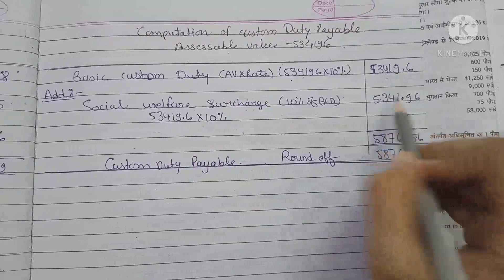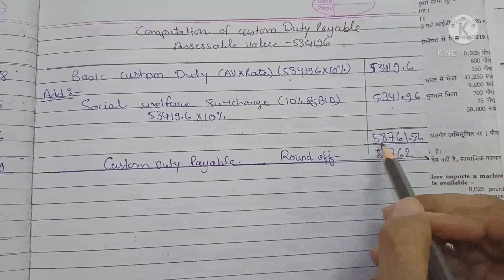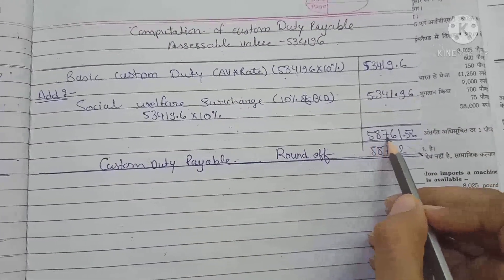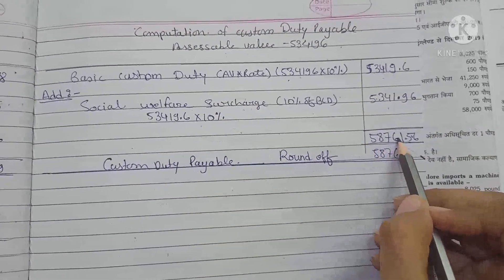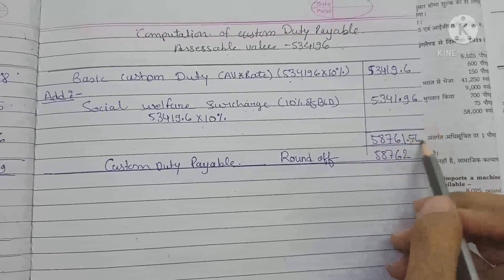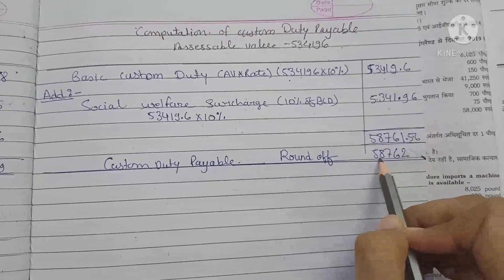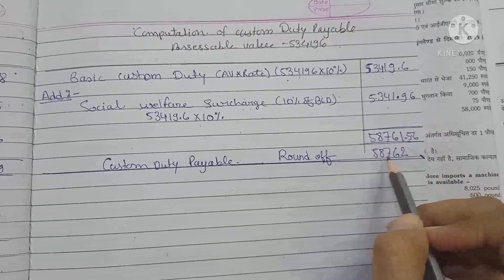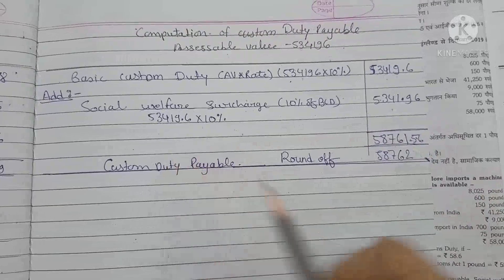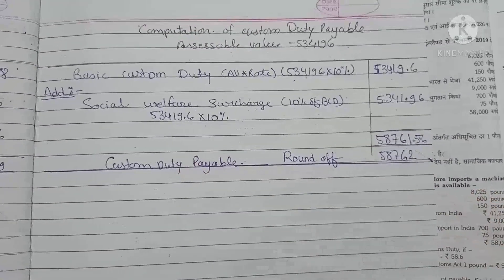We add social welfare surcharge at 10% of basic customs duty: 10% of ₹53,419.60 = ₹5,341.96. Since GST is not applicable, the total customs duty payable is ₹53,419.60 + ₹5,341.96 = ₹58,761.56, rounded to ₹58,762.